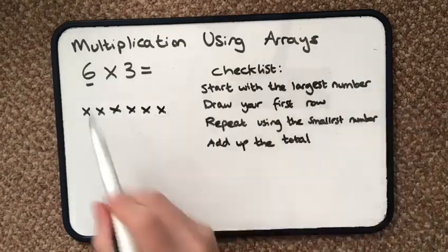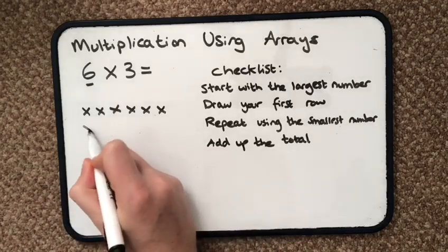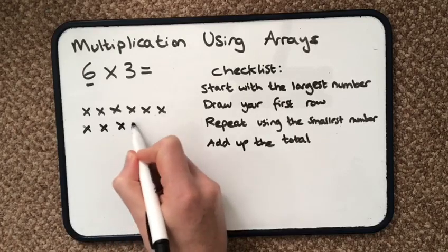I repeat using the smallest number, so I'm going to do 3 rows all together, and there's 6 every single time.